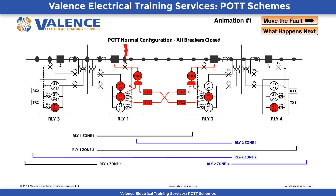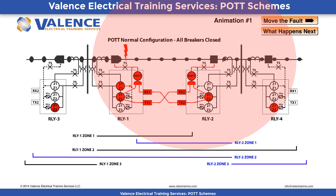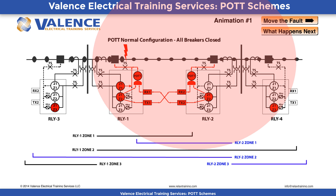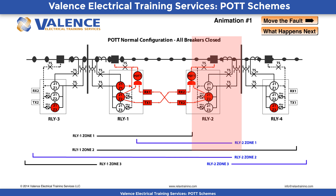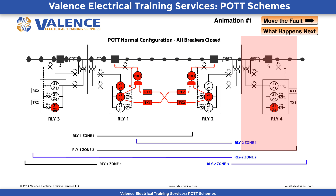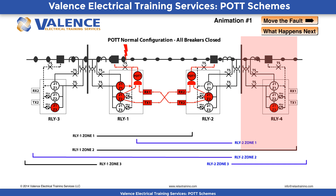We call Zone 2 an overreaching condition because it is purposely set somewhere around 120% of the line as described in the previous videos. Zone 2 is purposely set to detect faults in the section between the Zone 1 limit and the rest of the line, and it provides backup protection for faults on other lines in the forward direction. This means that Zone 2 will detect faults that may not be on the transmission line this relay is installed to protect.